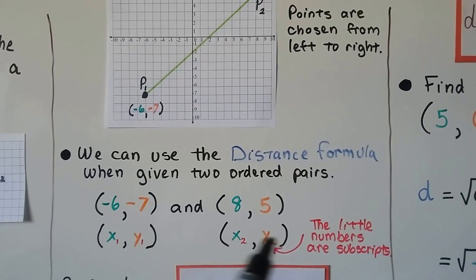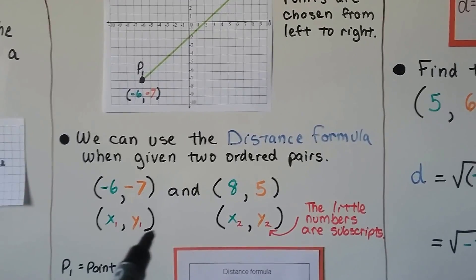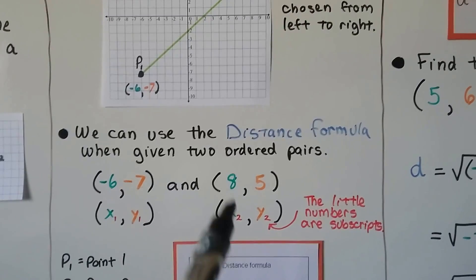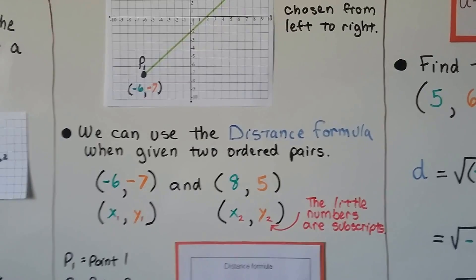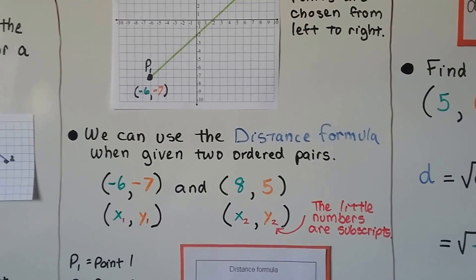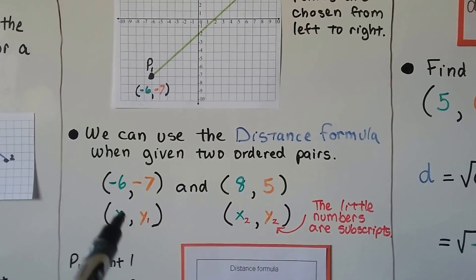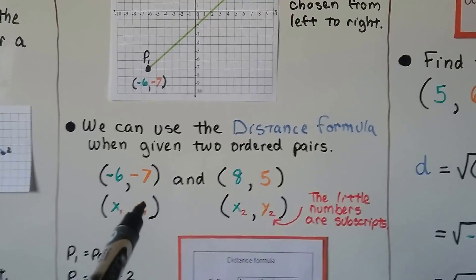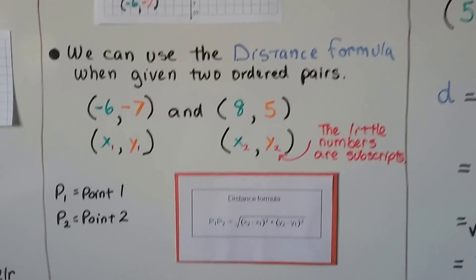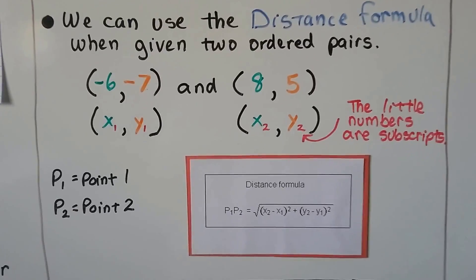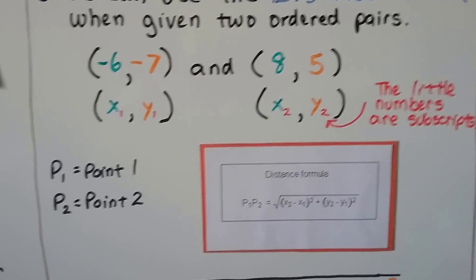We plug the ordered pairs into the formula. This is x-sub-1, y-sub-1, x-sub-2, y-sub-2. Those little numbers are subscripts — they tell us which number is which: here's the first x, the second x, the first y, and the second y. That way when we're doing formulas, we can just plug them in according to where they are.